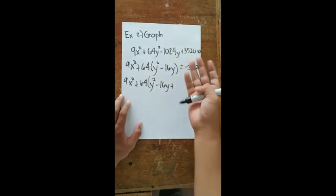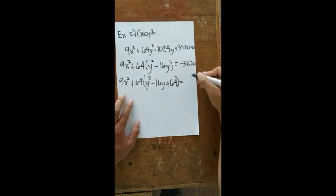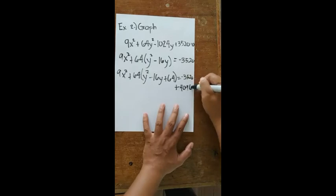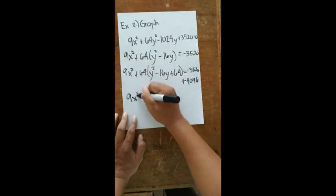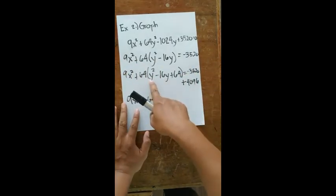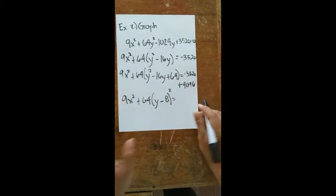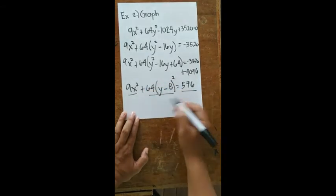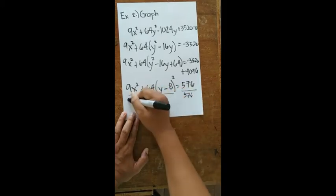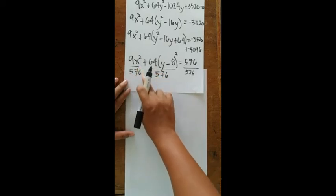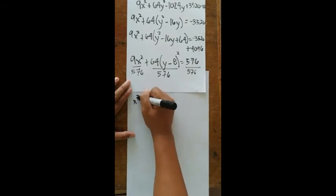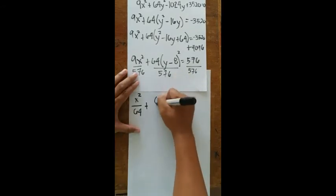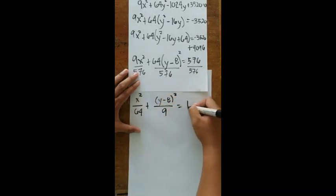Completing the square on y: 9x² + 64(y² − 16y + 64) = −3520 + 64(64). Here, (16/2)² = 64, and 64 × 64 = 4096. This gives 9x² + 64(y − 8)² = 576. Dividing every term by 576: x²/64 + (y−8)²/9 = 1.